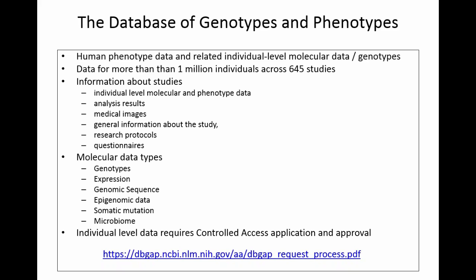dbGaP stands for the database of genotypes and phenotypes. It contains human phenotype data and related individual-level molecular data — often these are genotypes. There are lots of different kinds of studies in dbGaP encompassing lots of different numbers of participants, from a few to tens of thousands. There are about a million individual people represented in dbGaP at this point, across more than 600 studies.